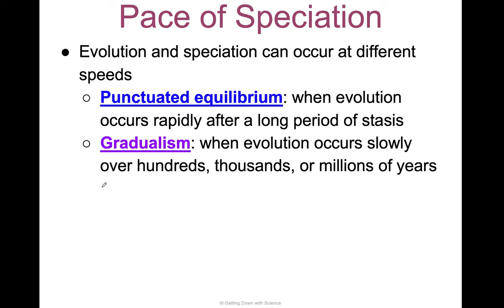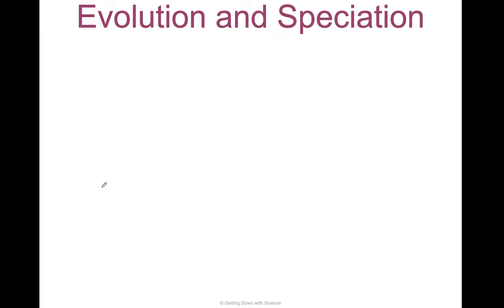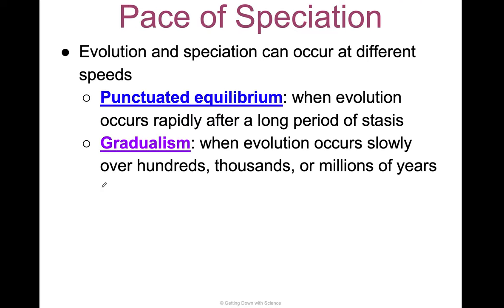Gradualism is when evolution occurs slowly over hundreds, thousands, or millions of years. It's that slow buildup of mutations — it's throwing spaghetti at a wall to see what sticks.